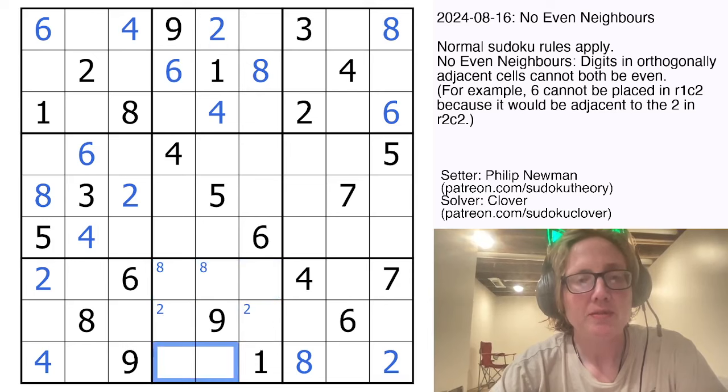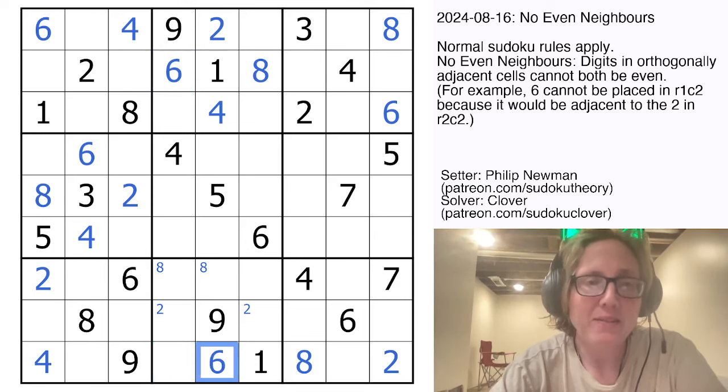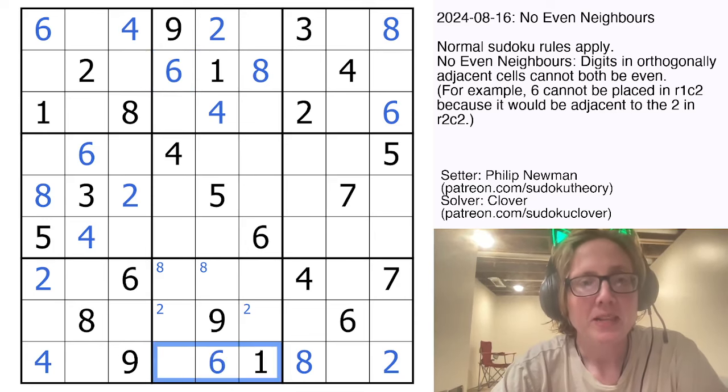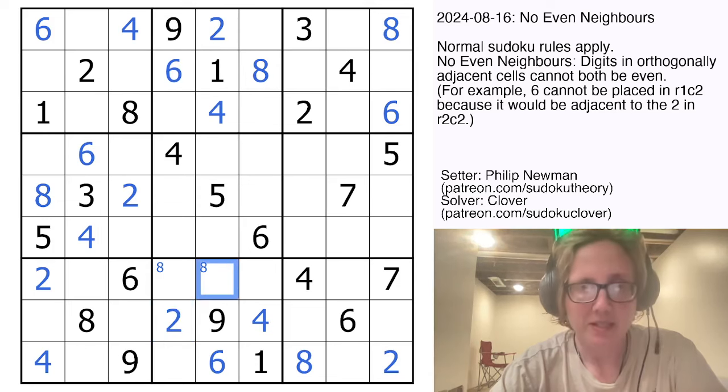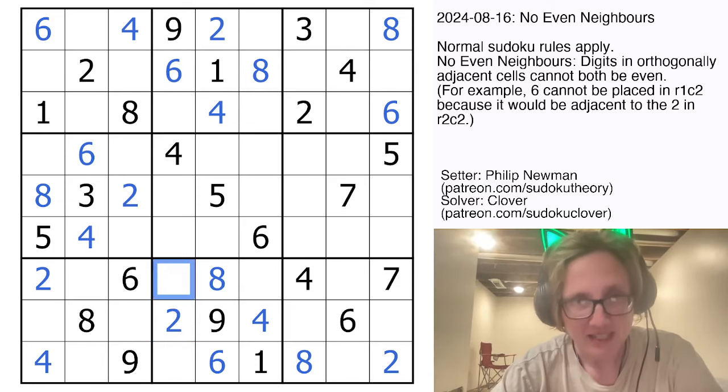6 has to go in one of these cells by Sudoku, and there's actually a 6 in column 4 now, so we can place the 6 there. And then 4 is going to have to go in one of these cells, and because there's a 4 here, we're going to place the 4. That in turn will place the 2, which will place the 8 because it can't be next to the 2.